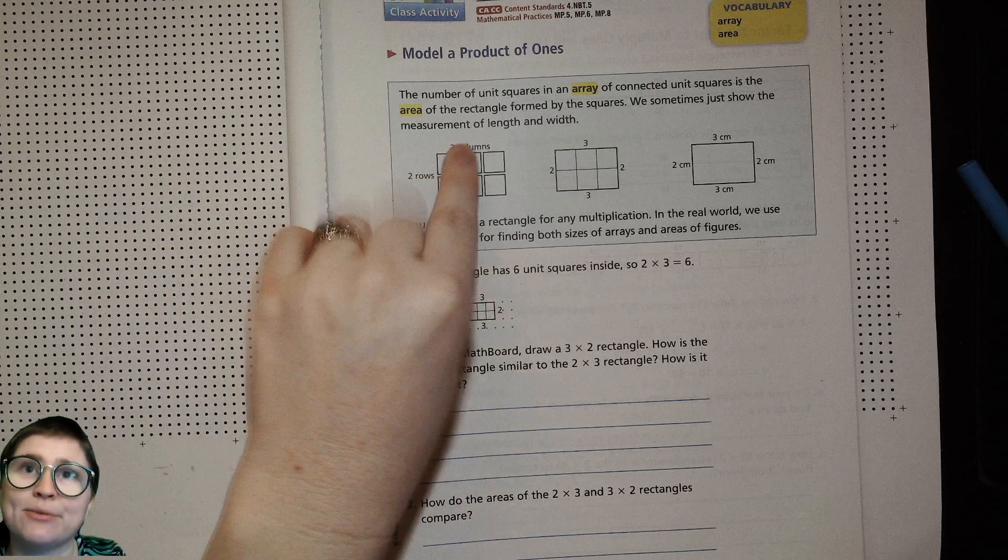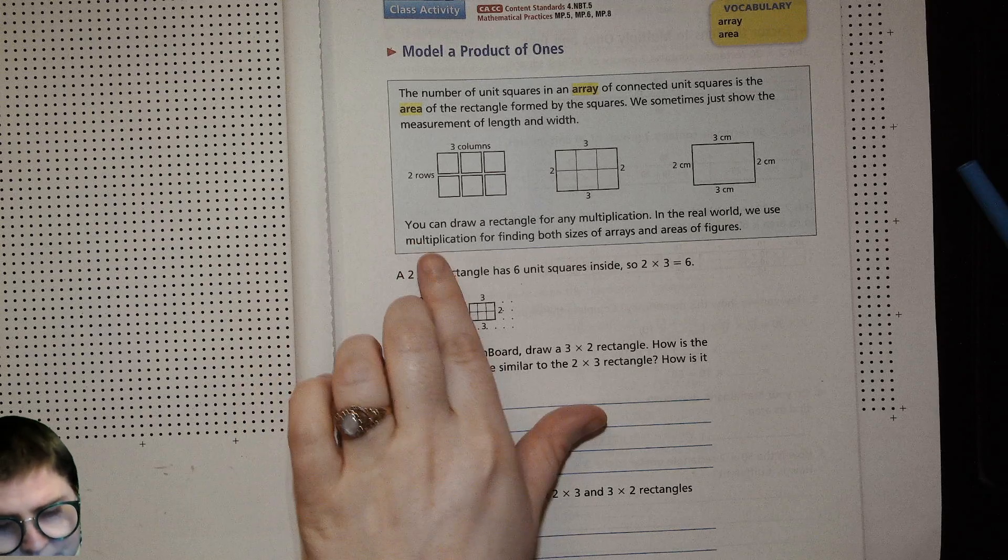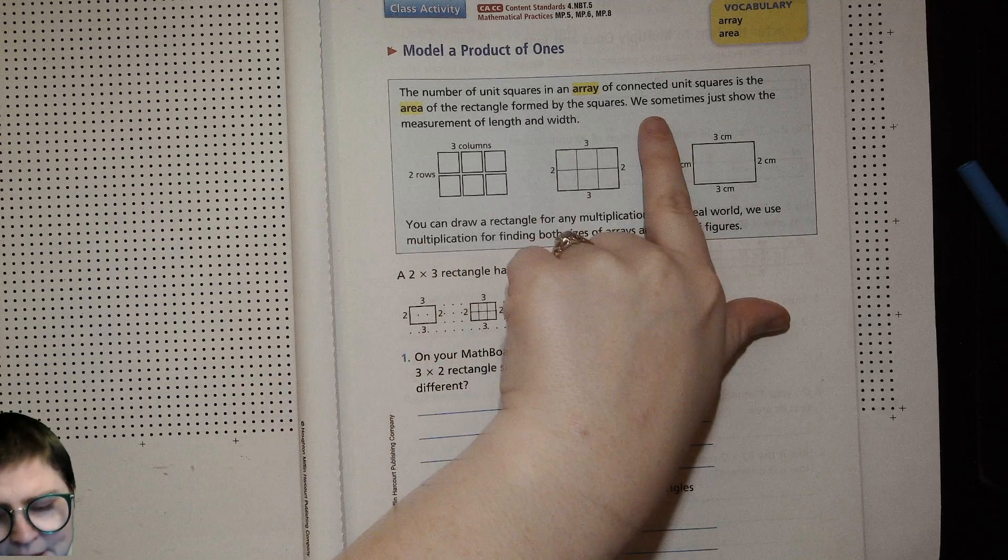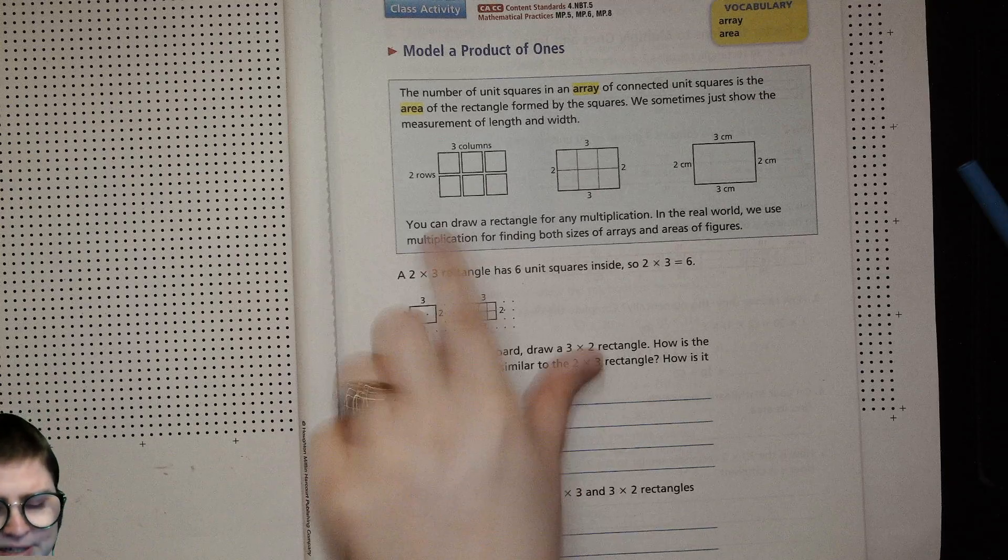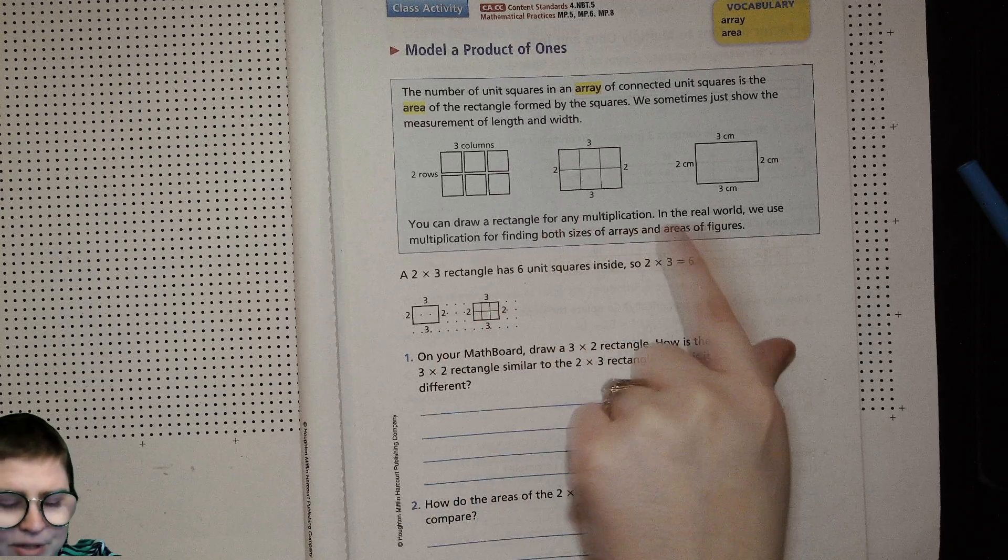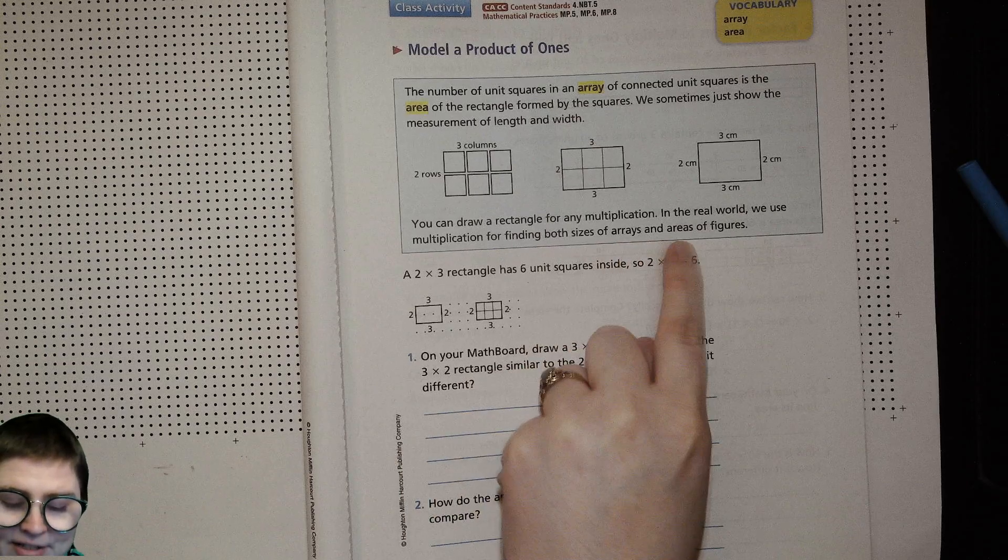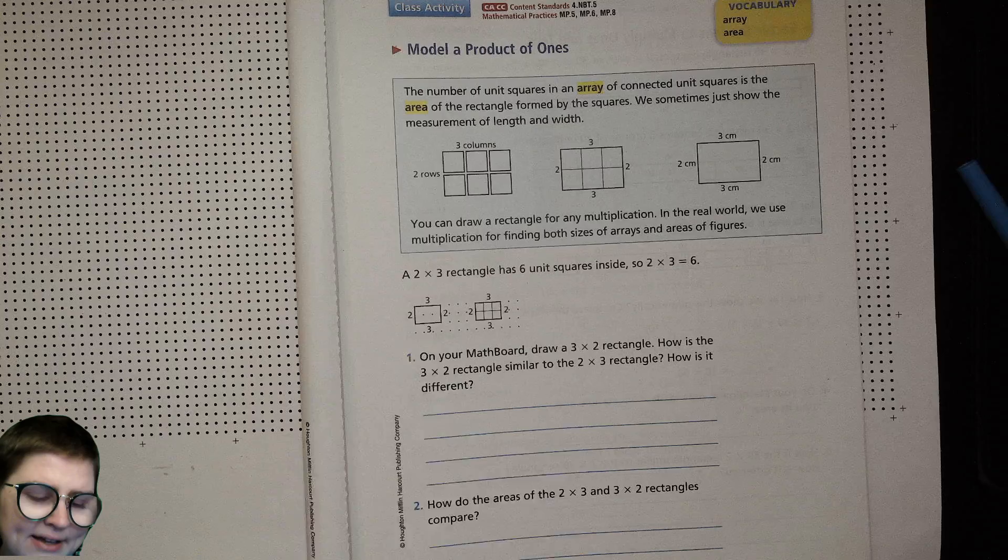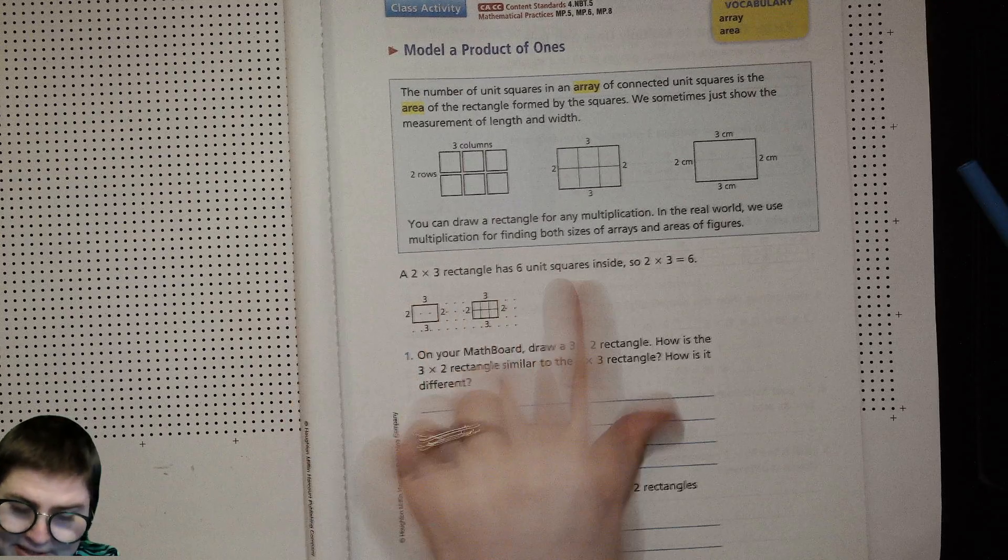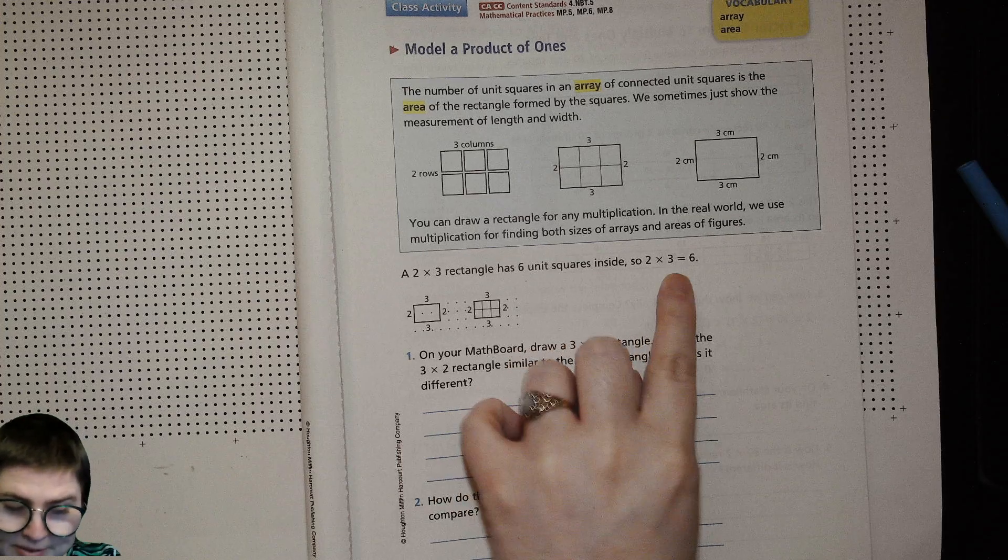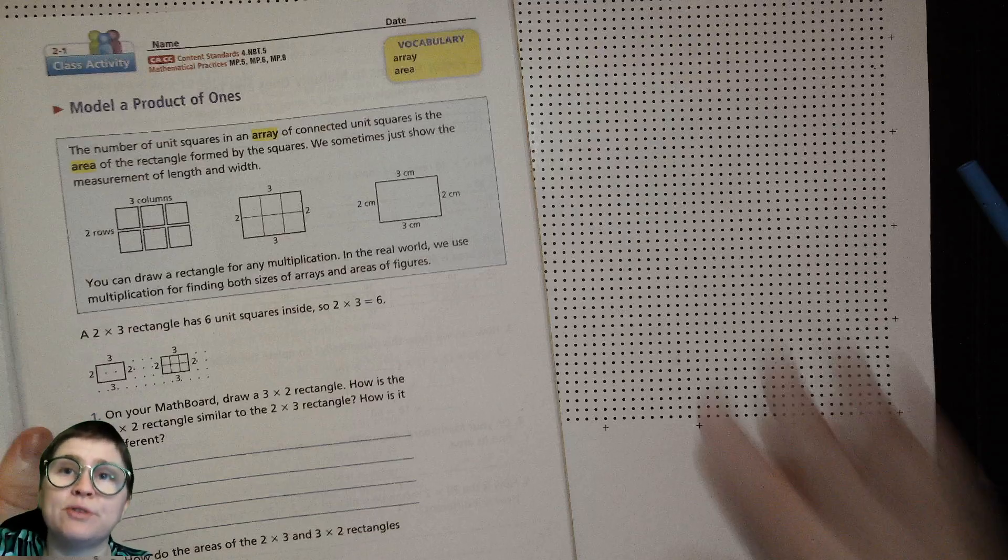Two times three. You can draw a rectangle for any multiplication. In the real world, we use multiplication for finding both sizes of arrays and areas of figures. A two by three rectangle has six unit squares inside. So it's two times three equals six. And here you can see, you're going to need your math board for this one.